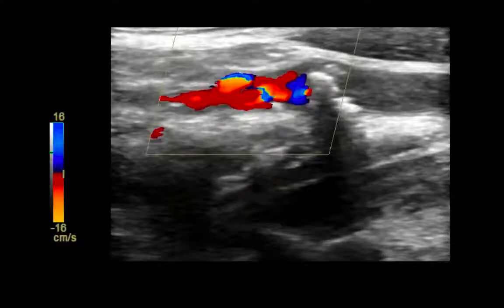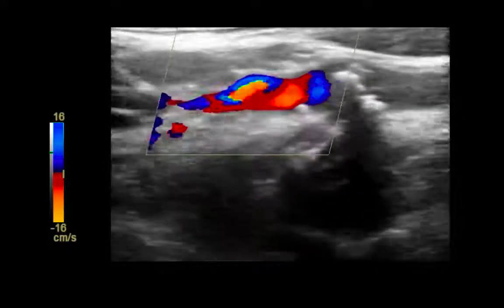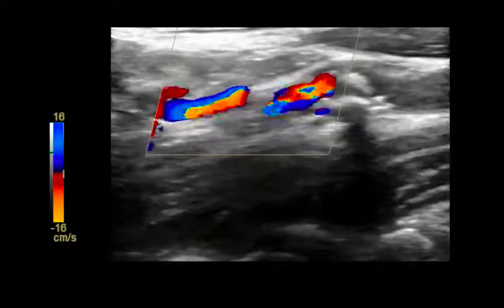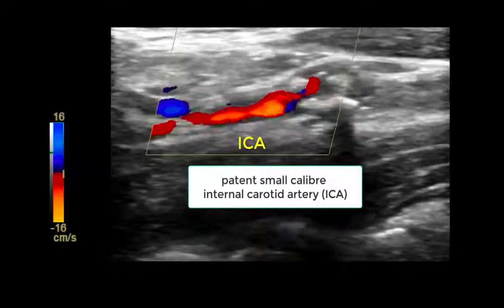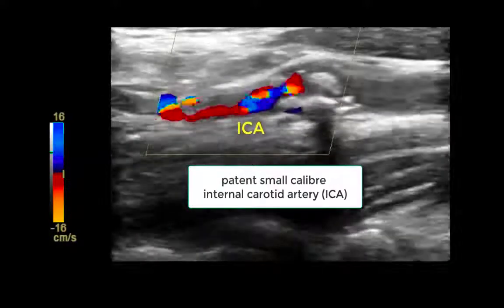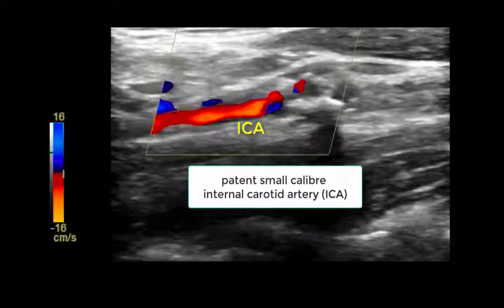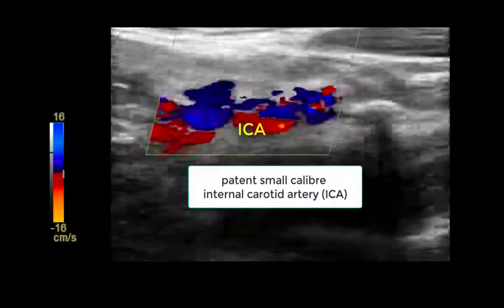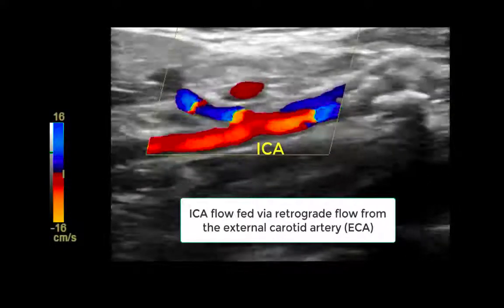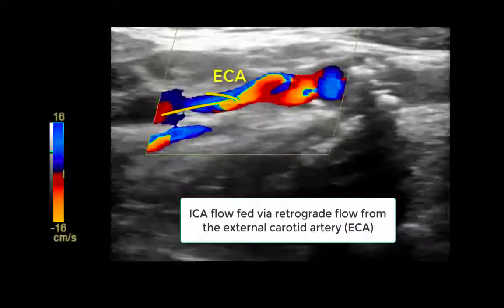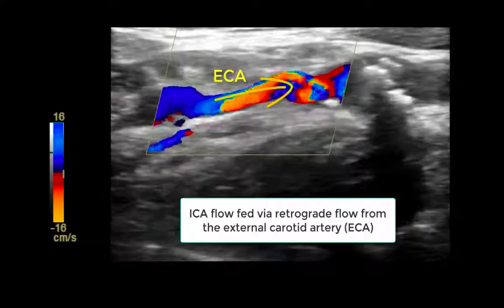We can see that there is flow throughout the internal carotid artery, which appears patent and of a small caliber. Flow in the internal carotid artery is fed via retrograde flow within the external carotid artery.